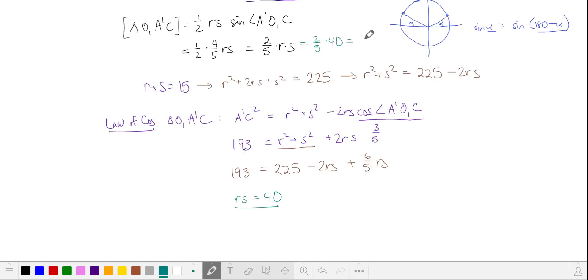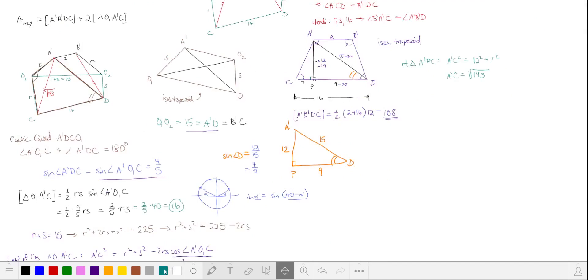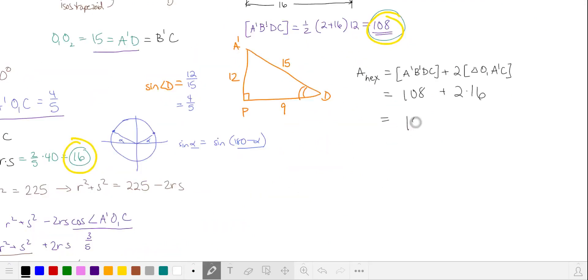We can plug that in up here. 2 fifths of 40 is 16. We have two of these triangles, and we're going to add it to the area of our trapezoid. So the area of our hexagon is 140. If you'd like me to solve any other AMC or AIME problems, please leave them in the comments.